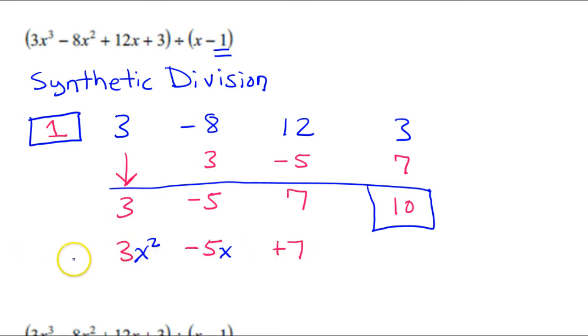If there was another term, it would have been the x to the third power term. Now, this number in the box is the remainder. And what you do with the remainder is you make a little fraction out of it, putting it over whatever you divided by to begin with. So this will be plus 10 over x minus 1.